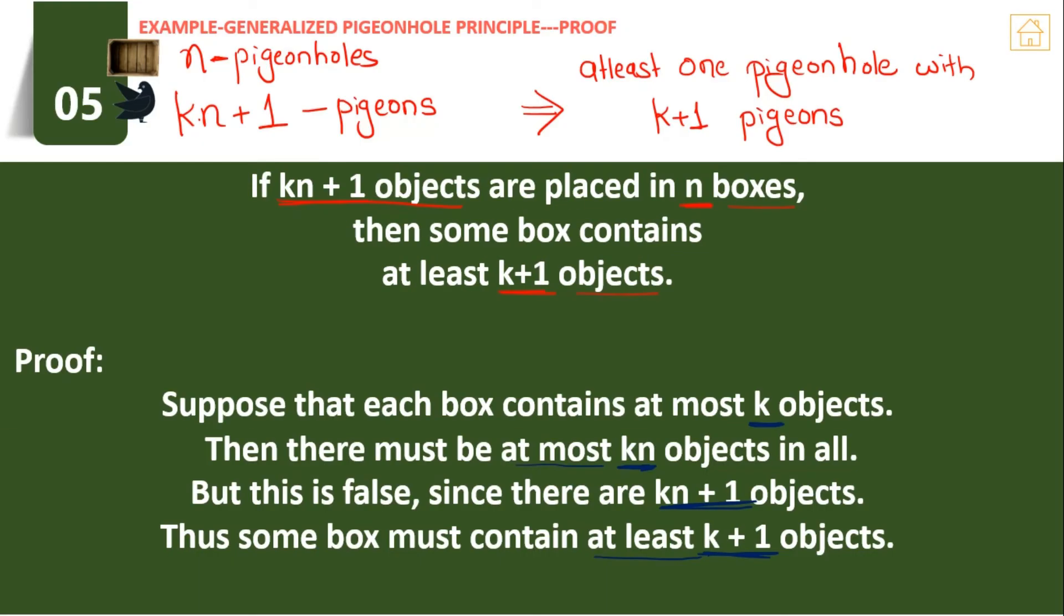We can also use this pigeonhole principle when the number of pigeonholes and pigeons are given, and we just have to find at least one pigeonhole with how many pigeons. This example of generalized pigeonhole principle used for proof is: if kn+1 objects are placed in n boxes, then some box contains at least k+1 objects.